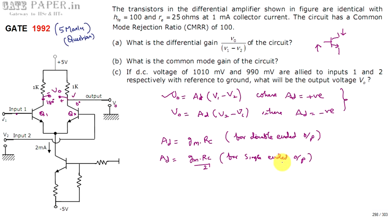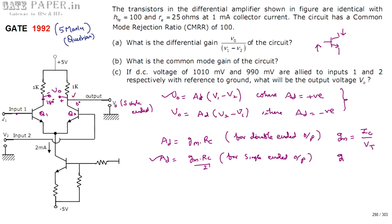Since V0 is single-ended in this problem, we use AD = GM × RC / 2. GM (transconductance) is calculated as IC / VT, where VT is the thermal voltage equal to 25 millivolts at room temperature and IC is 1 milliampere. So GM = 1 mA / 25 mV = 40 milliamperes per volt.